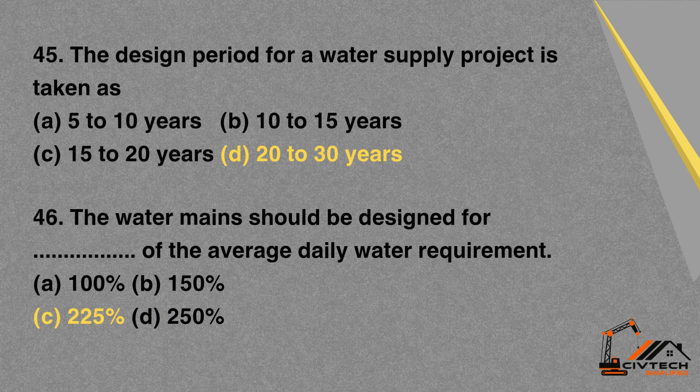MCQ 45: The design period for a water supply project is taken as — A. 5 to 10 years. B. 10 to 15 years. C. 15 to 20 years. D. 20 to 30 years. Correct option: D. 20 to 30 years.